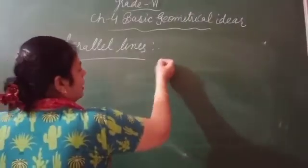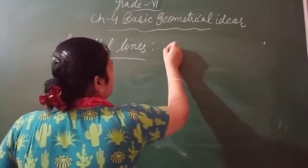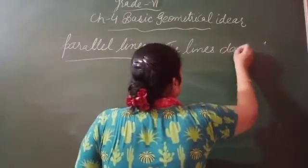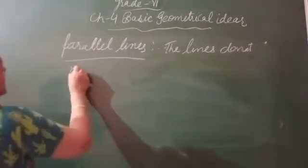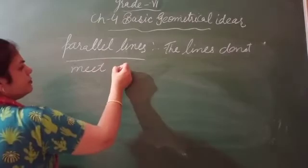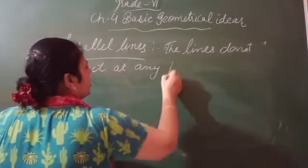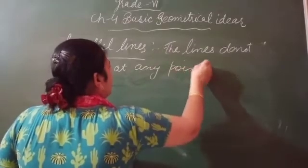Parallel lines: the lines do not meet at any point. Lines do not meet at any point. They are called parallel lines.